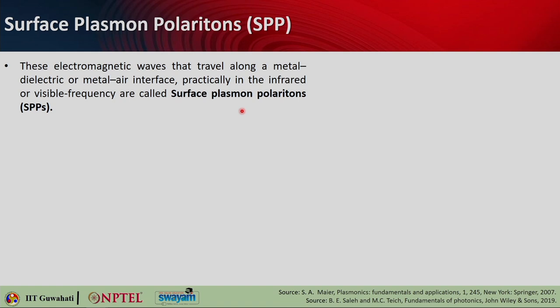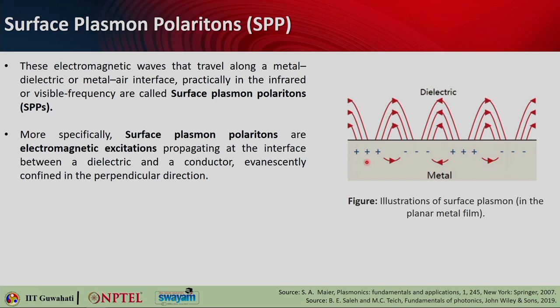Surface plasmon polaritons or SPPs are basically electromagnetic waves. They travel along a metal-dielectric or metal-air interface and are practically seen in the infrared and visible frequency range. This is the illustration of a surface plasmon. This is the thin planar metallic film and this is the boundary of the metallic film. On the top you have dielectric. The field or surface wave is allowed to propagate along the interface between this metal and dielectric. More specifically, surface plasmon polaritons are electromagnetic excitations propagating at the interface between a dielectric and a conductor, and they decay along the perpendicular direction.